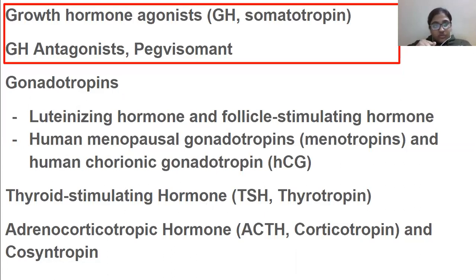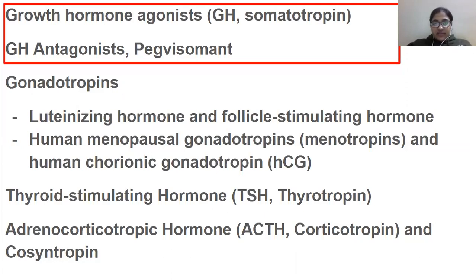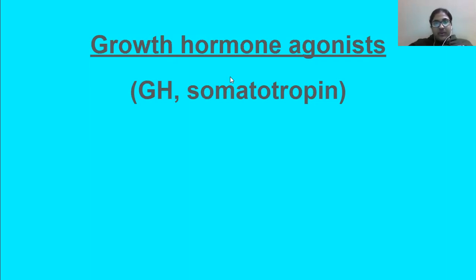If a child's growth is retarded, we can give hormones to promote growth. We'll read about syndromes where growth is badly affected. If somebody has acromegaly — like Khali, the Indian wrestler who is really tall — we will discuss what kind of growth hormone antagonist can be given to suppress growth. First we will cover growth hormone agonists, starting with somatotropin.